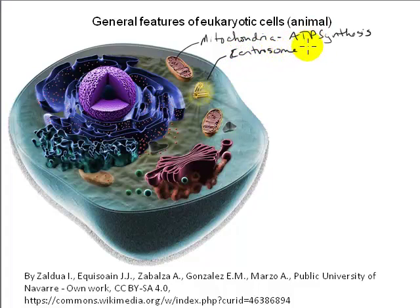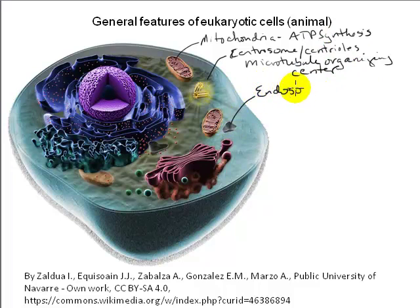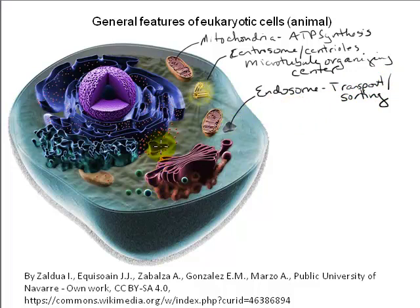The centrosome is an organizing center involved with controlling changes in the structure of the cytoskeleton, particularly the microtubule network. It consists of two bundles of microtubules called centrioles. Its function is a bit of a mystery — plant cells lack centrosomes but are still capable of organizing their microtubule networks. Endosomes are membrane-enclosed compartments that transport and sort materials to specific cellular locations, such as from the Golgi complex or the plasma membrane to the lysosome.